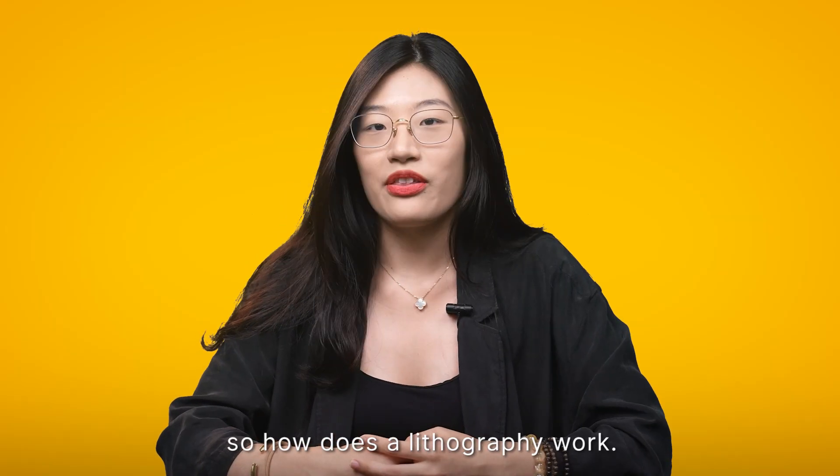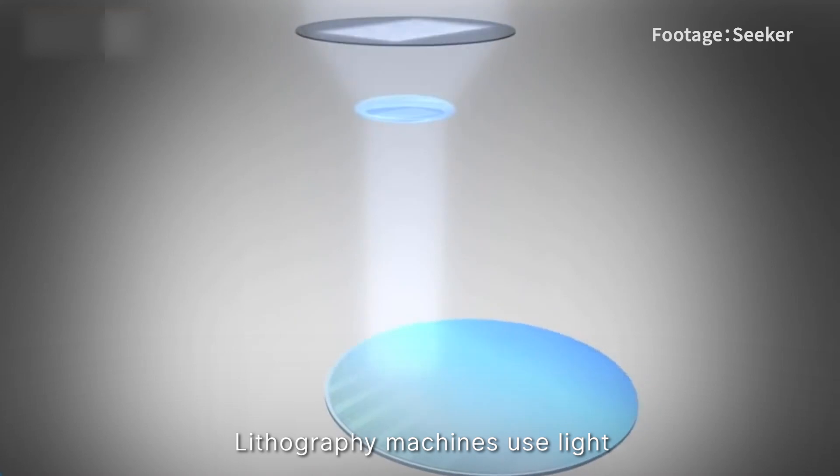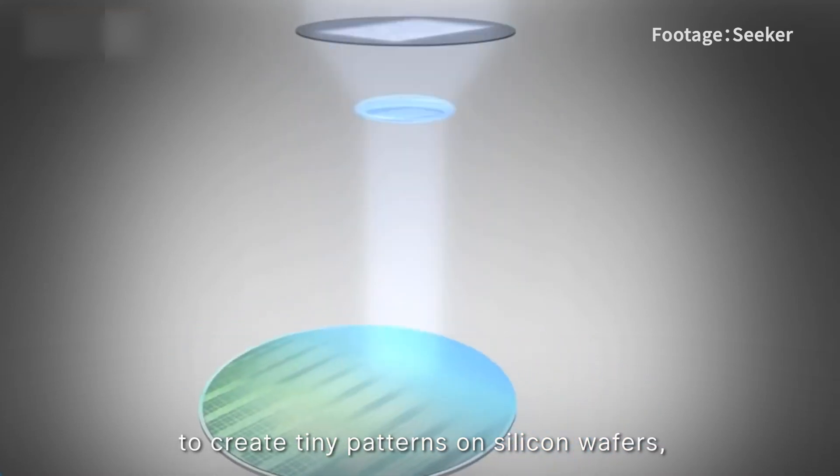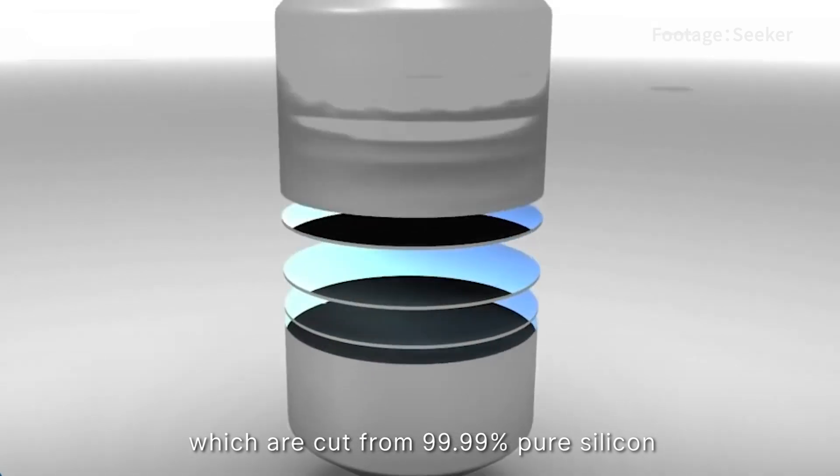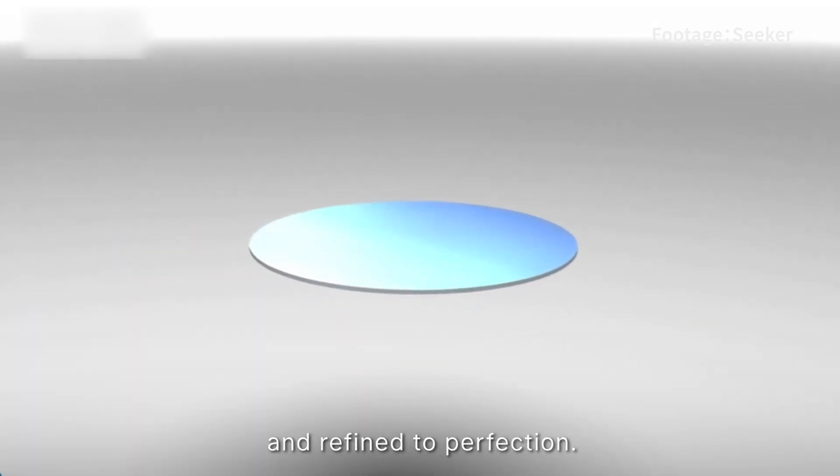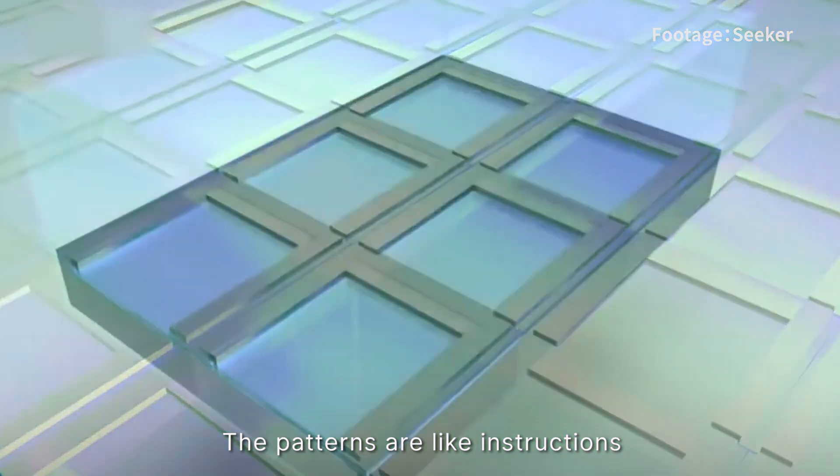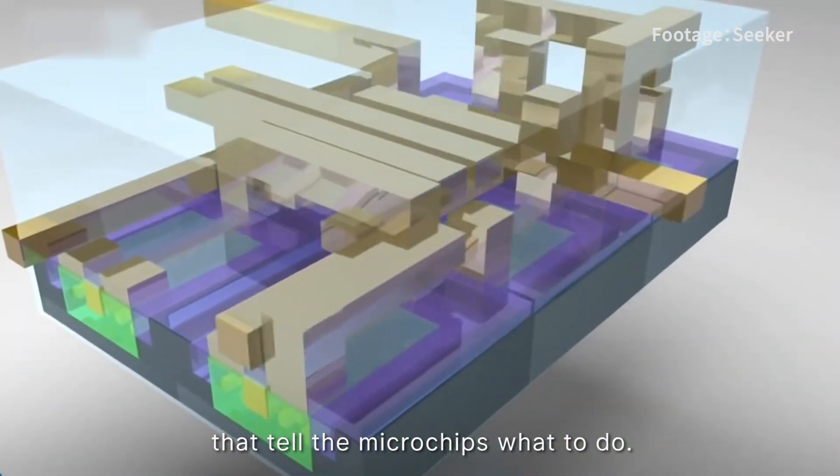So how does lithography work? Lithography machines use lights to create tiny patterns on silicon wafers, which are cut from 99.99% pure silicon and refined to perfection. The patterns are like instructions that tell the microchips what to do.